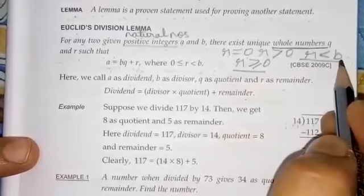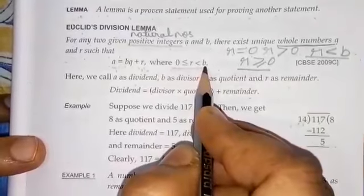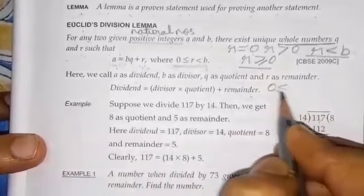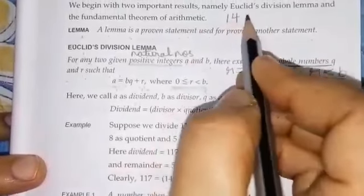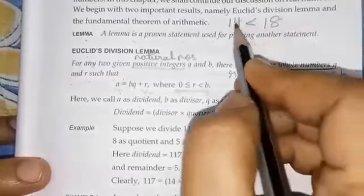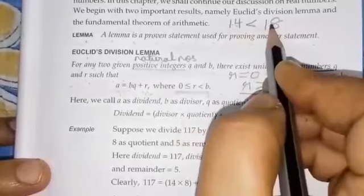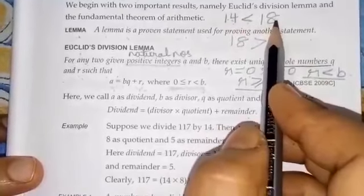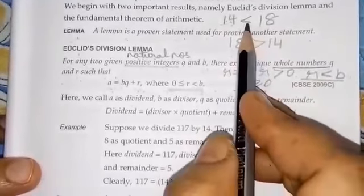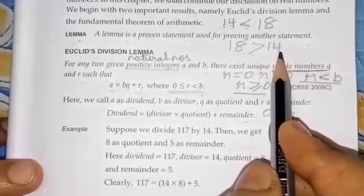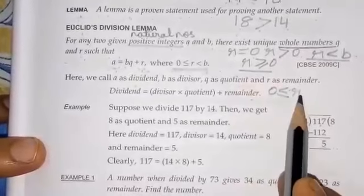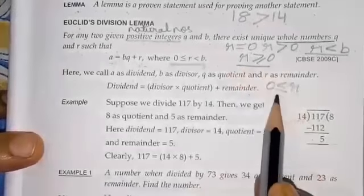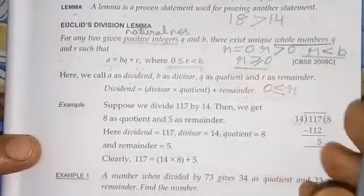These two conditions together are expressed in this compound inequality. r ≥ 0 can also be written as 0 ≤ r, because when numbers change their positions, the inequality is reversed — just as 14 < 18 is the same as 18 > 14. So r ≥ 0 can be rewritten as 0 ≤ r. The other condition is that r must be less than b.